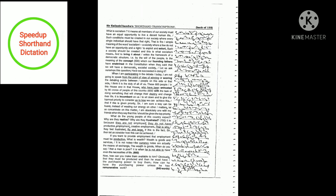What is wealth? Wealth is goods and services. It is not notes. The currency notes are actually the means of exchange. The wealth is goods. When do you say that a man is poor? It is when he is not able to have even the necessities of life. Now, how can you make them available to him? Obviously, first they must be produced. And then he must have the purchasing power to buy them. How can he have the purchasing power? Unless he has remunerative work.